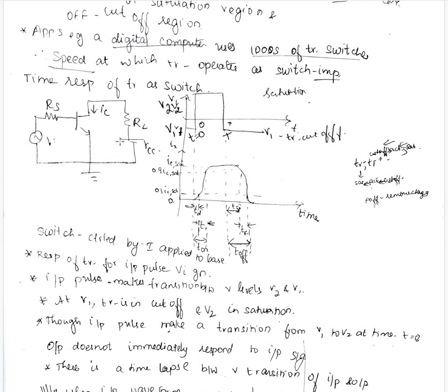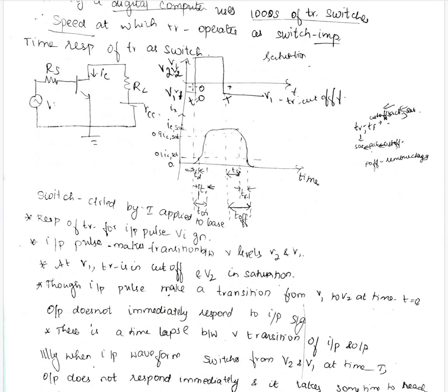We make the biasing in such a way and have a source resistance and load resistance. This is the input side voltage. At t equal to 0 it starts to increase and is in on position, then at t equal to capital T it comes to off position. The voltages are from V1 to V2. In V1 it is in cutoff position and in V2 it is in saturation position.